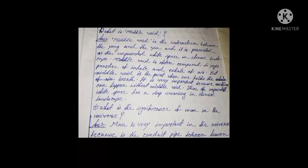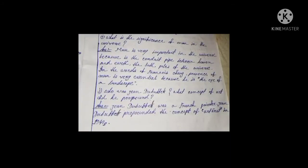What is middle void? Middle void is the interaction between the Yang and the Yin, and it is presented as the unpainted white space in Chinese landscape. Middle void is often compared to the yogic practice of inhale and exhale of air. Middle void is the point when one holds the breath. It is very important because nothing can happen without middle void. Man is very important in the universe because he is the conduit between heaven and earth — the two poles of the universe. The presence of man is very essential because he is the eye of a landscape.